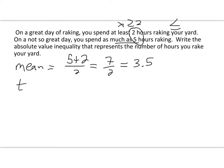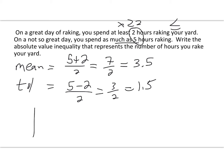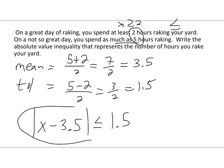For the tolerance, we do five minus two divided by two — three divided by two is one and a half, or 1.5. So the absolute value of x minus 3.5 is going to be less than or equal to 1.5. Done — that's all we're looking for here.